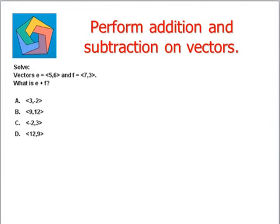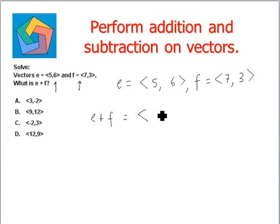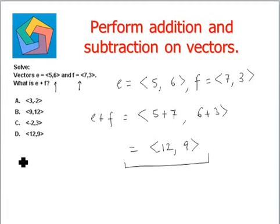Let's look at the next question. Solve vectors e is 5 comma 6 while f is 7 comma 3. What is e plus f? e is given by 5 comma 6 while f is given by 7 comma 3. So, e plus f is nothing but we add the corresponding components, that is 5 plus 7 and 6 plus 3. 5 plus 7 is 12 while 6 plus 3 is 9. This is the final answer, which can be seen in option d.